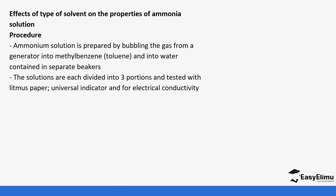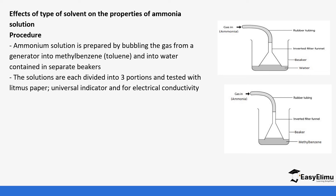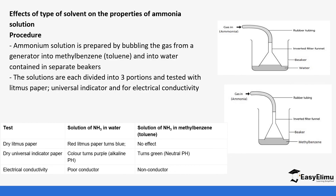Ammonia solution is prepared by bubbling the gas from a generator into methylbenzene and into water in separate containers. The solutions are each divided into three portions and tested with litmus paper, universal indicator, and conductivity. The observations: the red litmus paper turned blue for ammonia bubbled in water, but there was no effect with ammonia in methylbenzene. The universal indicator turned purple for the one in water, but remained green (neutral) for the one in methylbenzene.